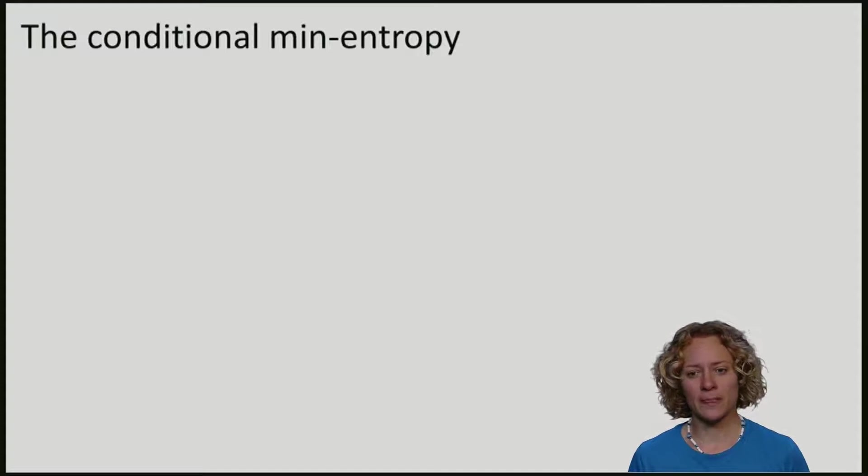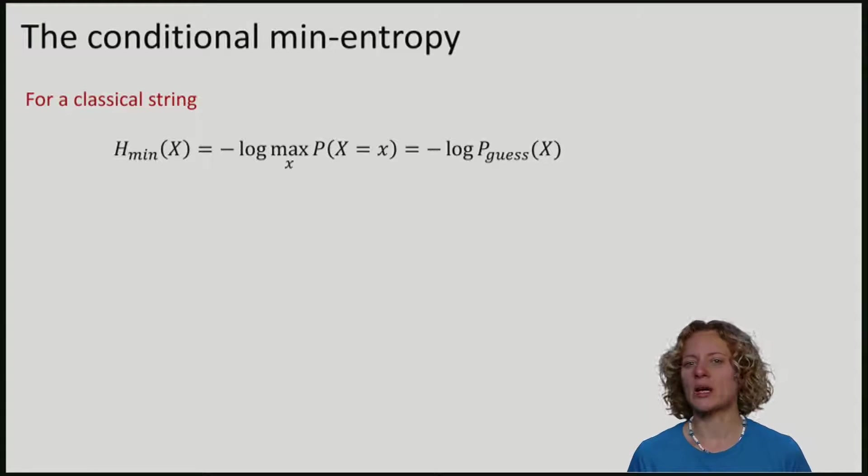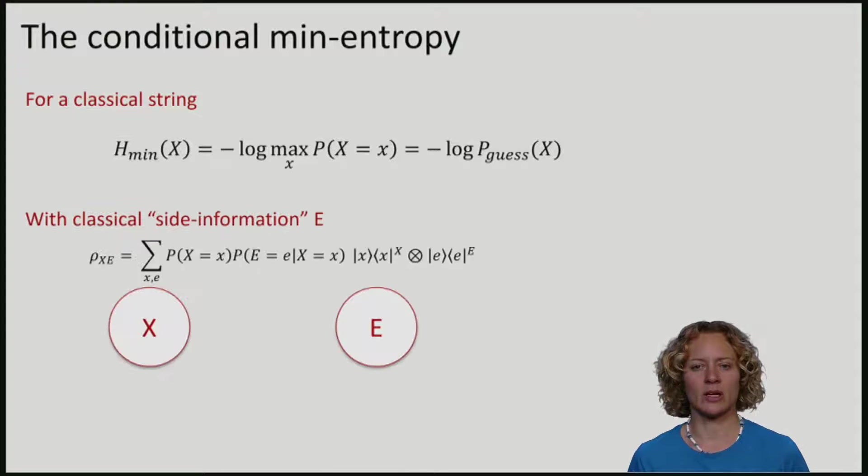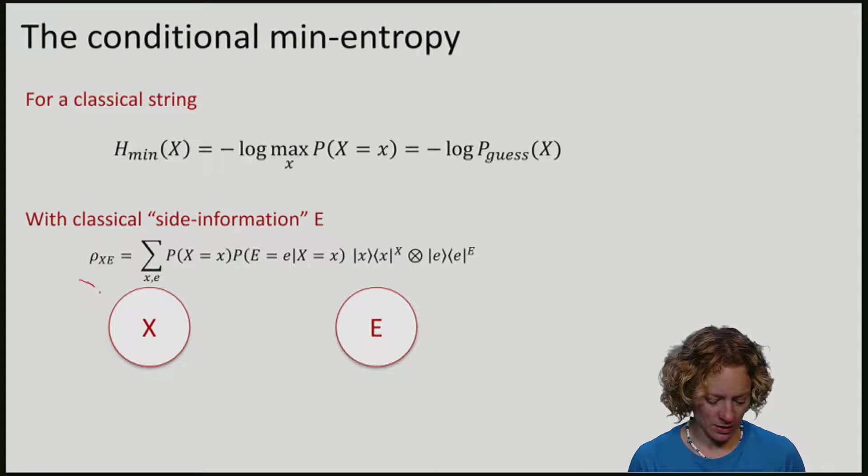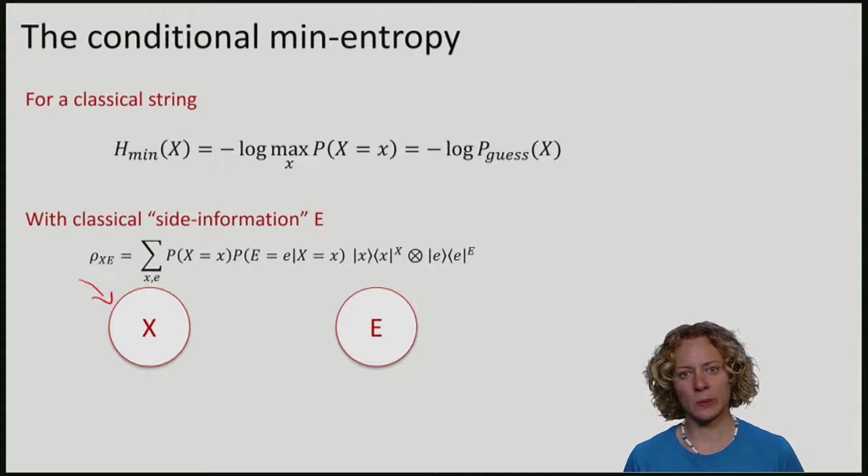Let's now go back to a situation where an eavesdropper may have gotten some information e about x. We now have two systems: x, which is always classical, and e, which may be quantum and holds some information about x.